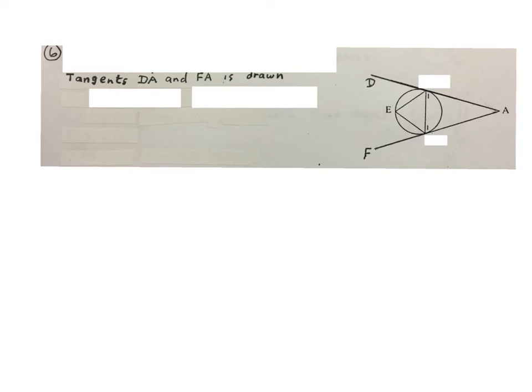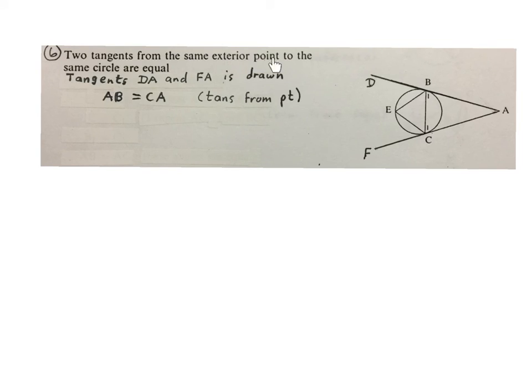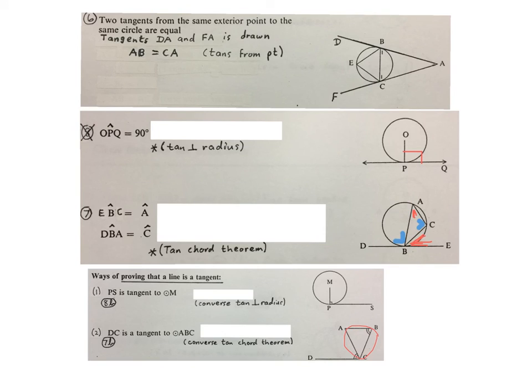The last theorem. They're telling us tangents DA and FA is drawn. So there's my DA, there's my FA. Your statement then will be AB is equal to CA. Reason, tans from same point. Be careful, people get mixed up here. That's not DA and FA. It's from point to contact and from point to contact that they're equal. So remember, two tangents from the same exterior point to the same circle are equal. Please stop the video and look at these three theorems with the two ways of proving a line to be a tangent.